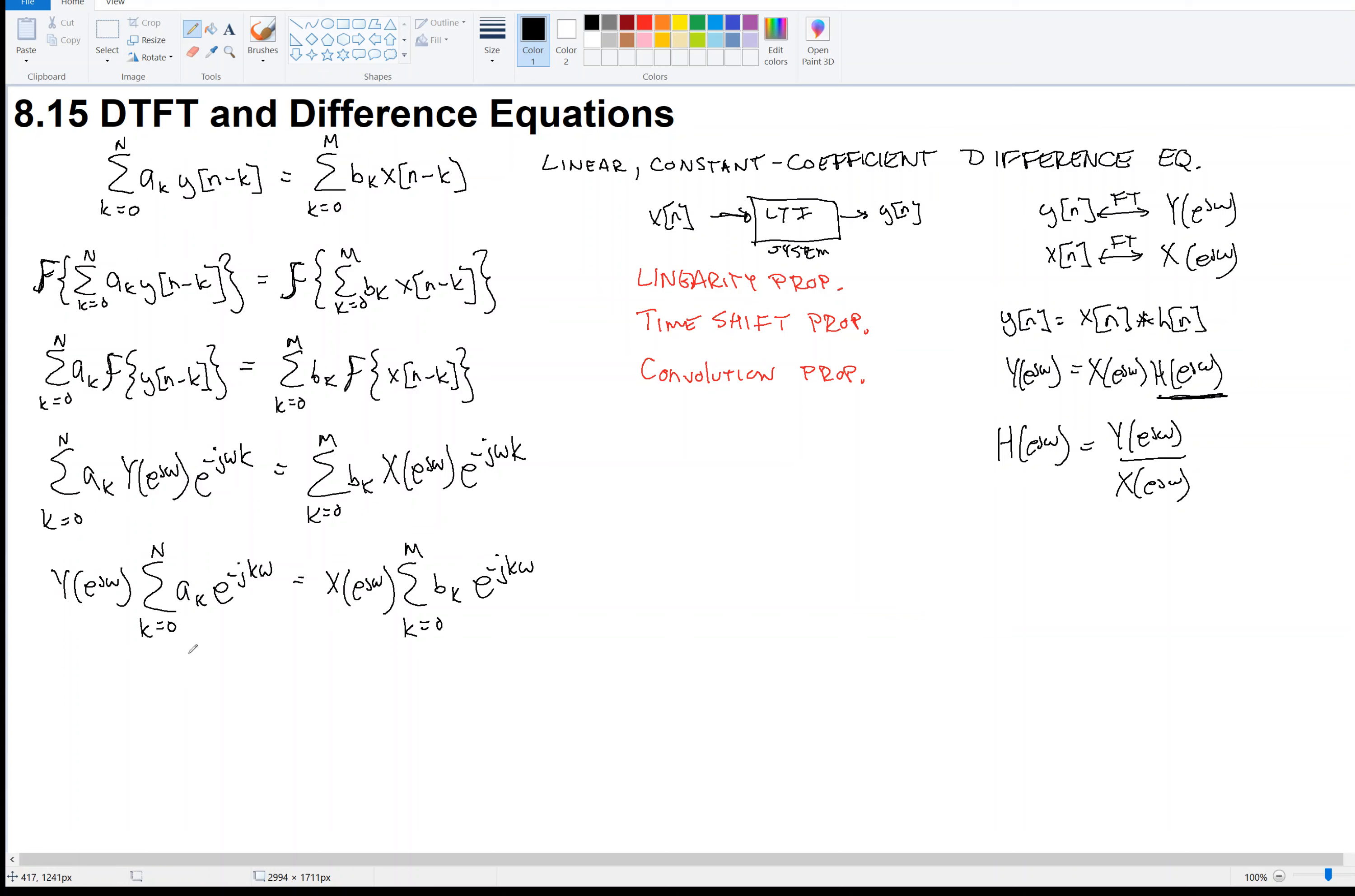So let me get y over x. So I divide by x to bring it over here, and then I divide by y's summation, and I get y over x is equal to the sum of the bk's, e to the minus j k omega, divided by the sum of the ak's, e to the minus j k omega, and that is the answer. That is the frequency response of this, of the system that is characterized by that difference equation.